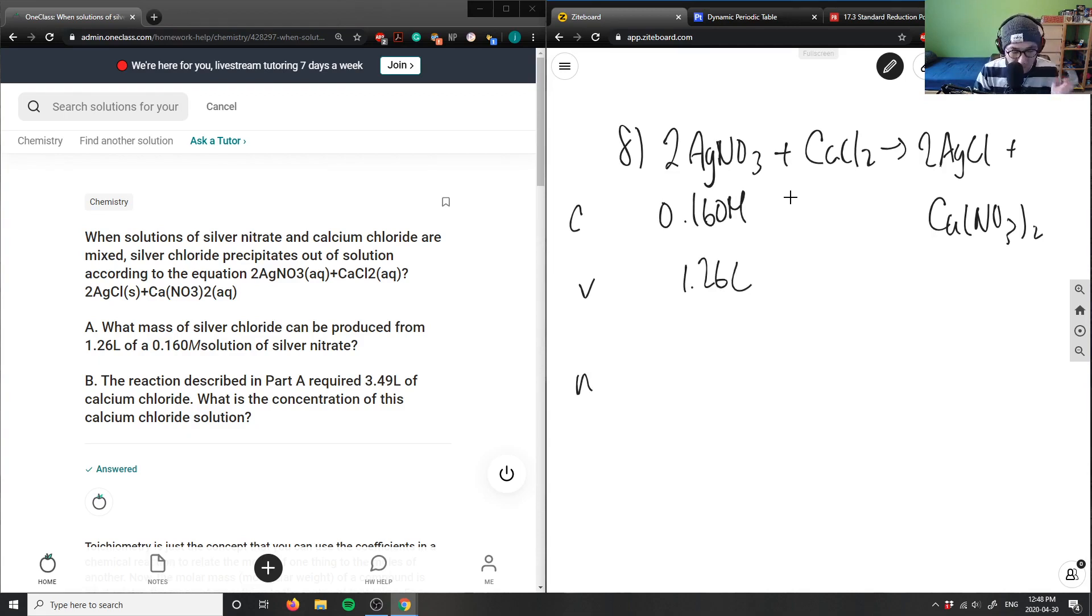Moles is simply just c times v here, because the concentration is moles divided by volume which means moles is 0.160 times 1.26, so it's multiplication. This gives me 0.2016 moles of solution here.